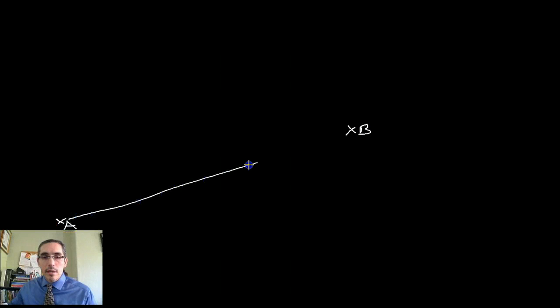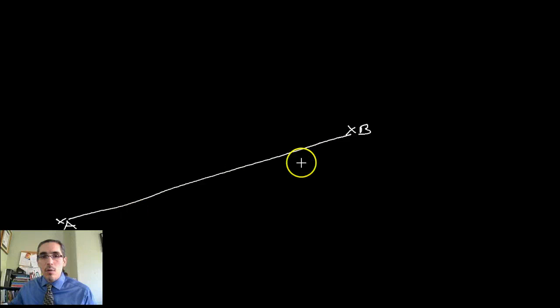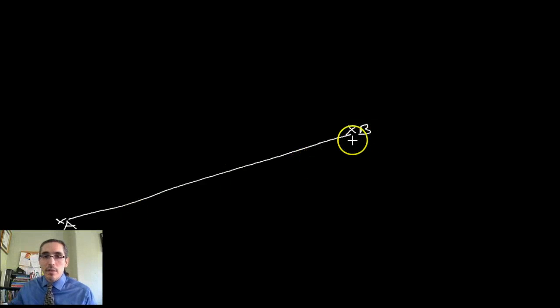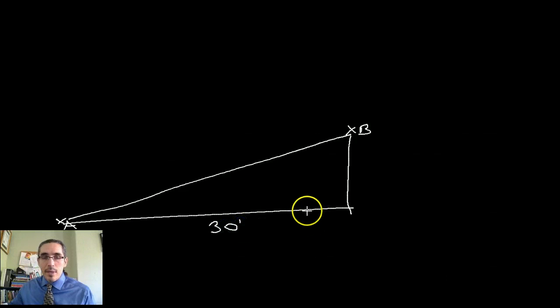So let me talk about it in a real simple example. Let's imagine that we have a point over here, we'll call it point A, and we've got another point over here, and we'll call it point B. And so those two points are separated by a horizontal distance, and in this case by a vertical distance as I've drawn it. So let's imagine that A is 30 feet away from B, horizontally speaking, and B is 3 feet higher than point A.